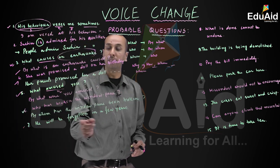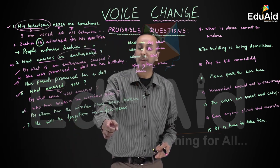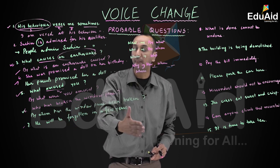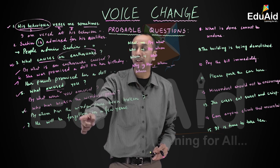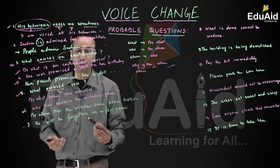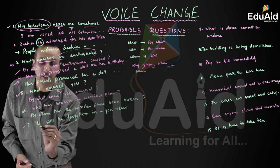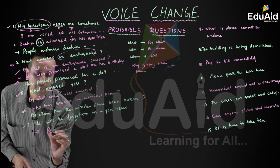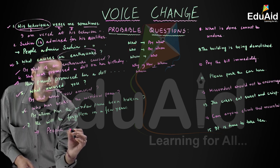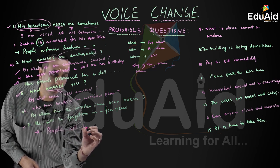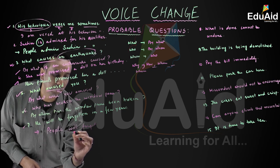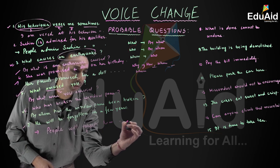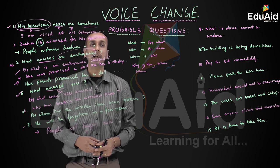Question number seven: 'He will be forgotten in a few years.' This sentence is in passive structure — future passive form, V + V3. The active form uses 'people' as subject: 'People will forget him in a few years.'